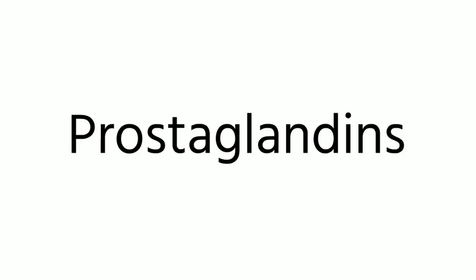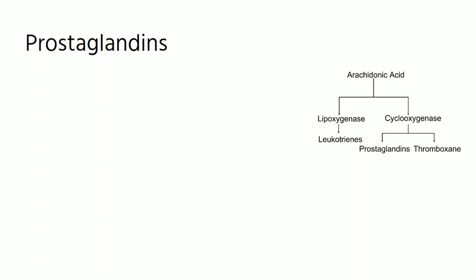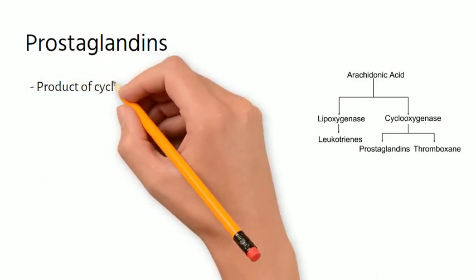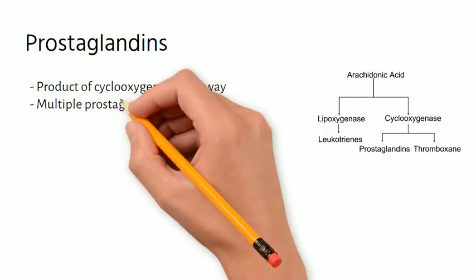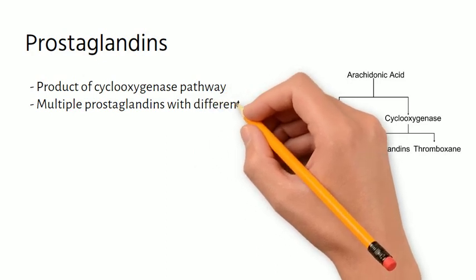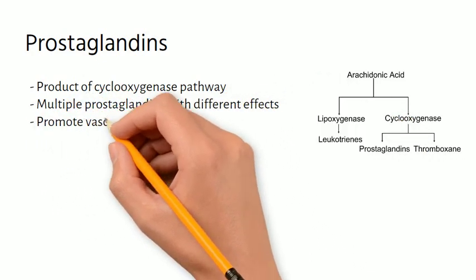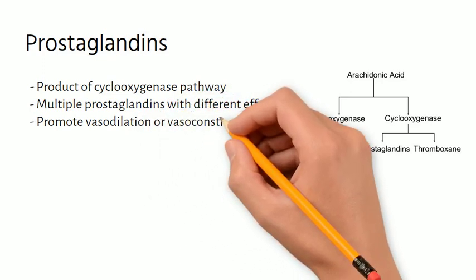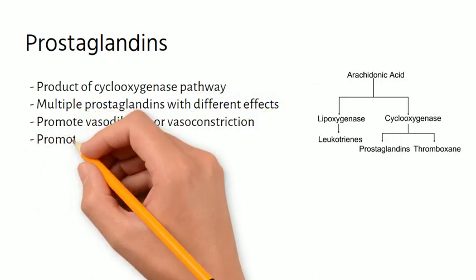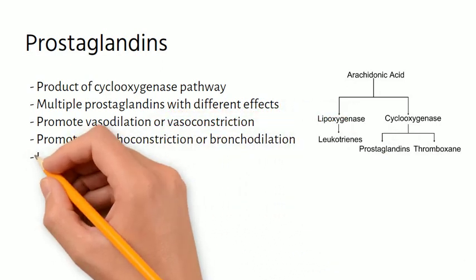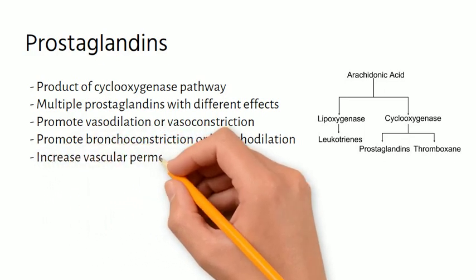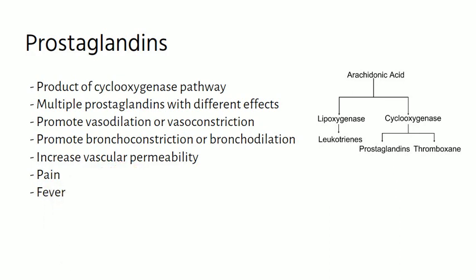Prostaglandins are another end product of arachidonic acid metabolism, coming from the cyclooxygenase pathway. Activation of the cyclooxygenase pathway results in multiple prostaglandins with different and sometimes opposite effects. For example, prostaglandins can promote vasodilation or vasoconstriction, bronchoconstriction or bronchodilation. Prostaglandins also increase vascular permeability and can cause pain and fever associated with inflammation.